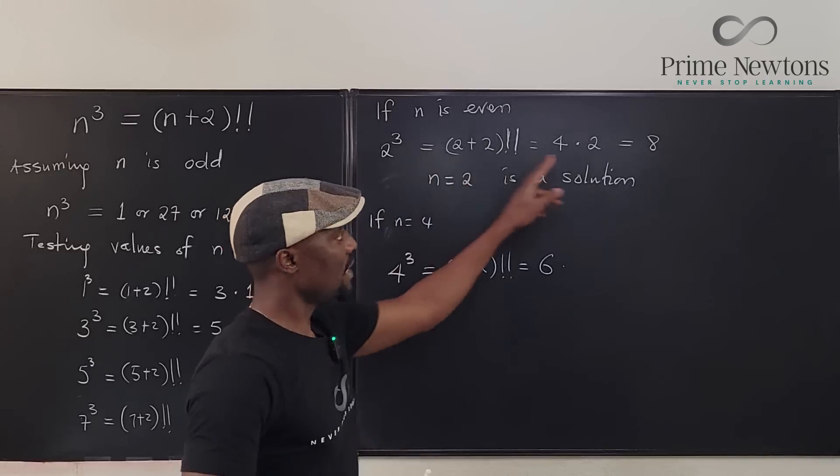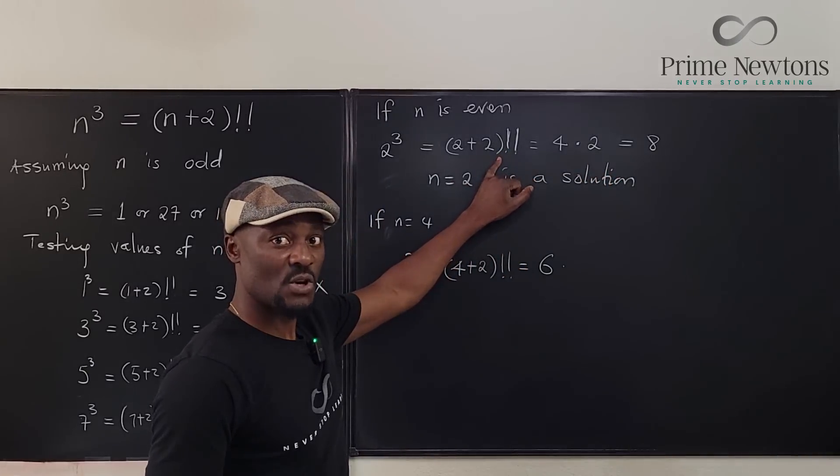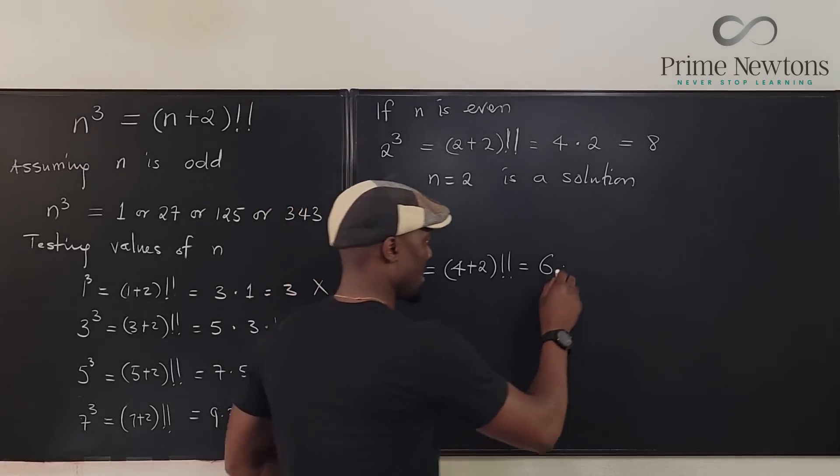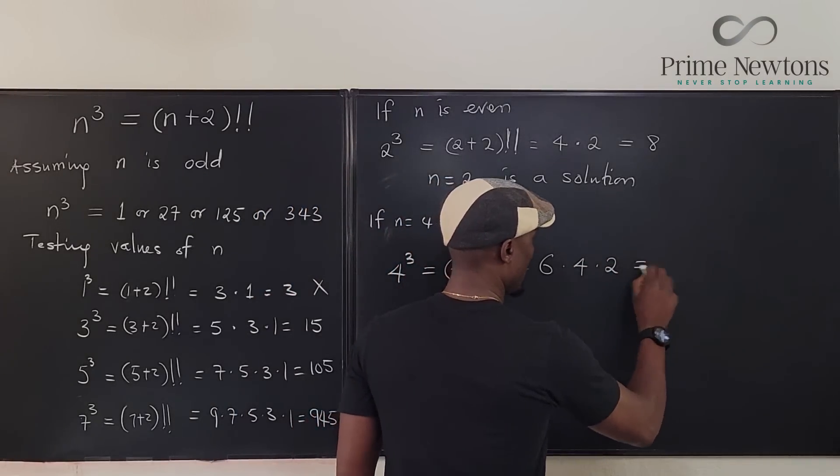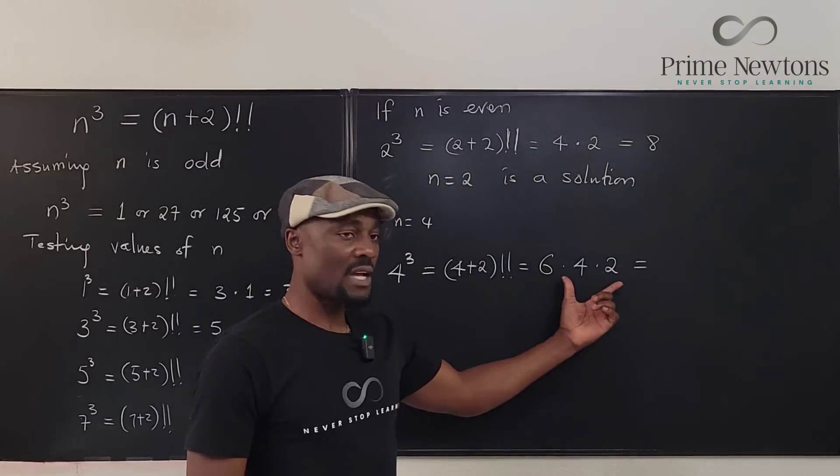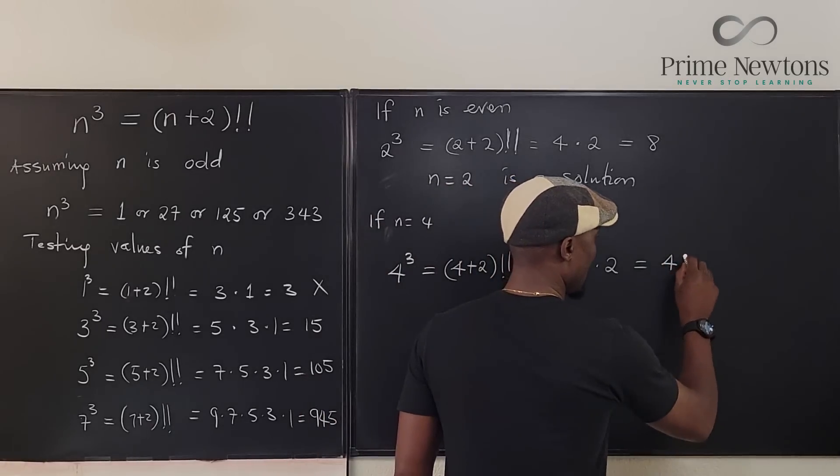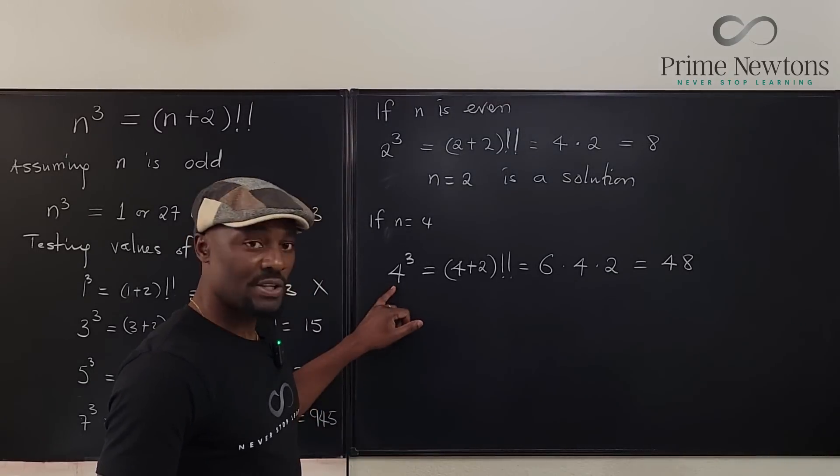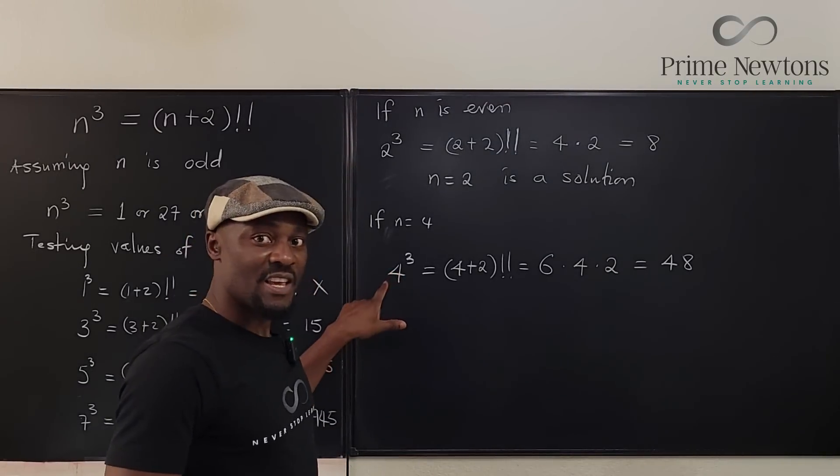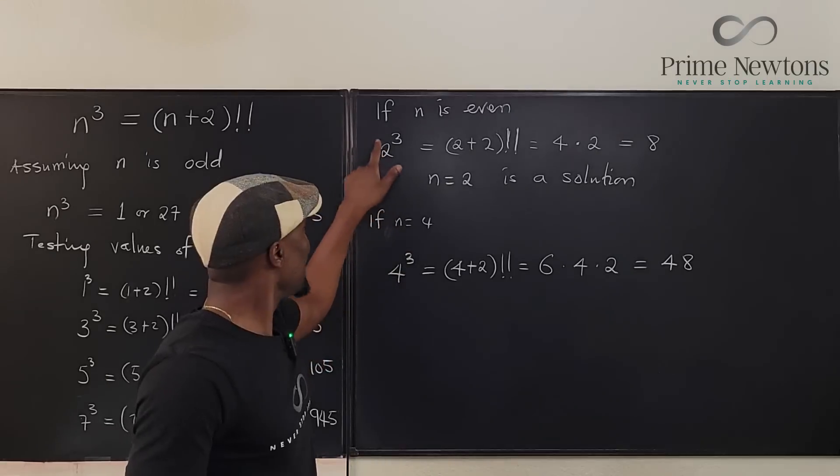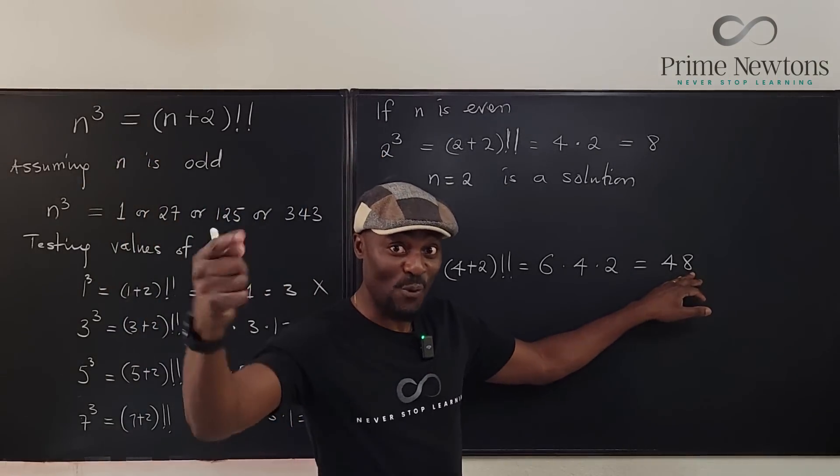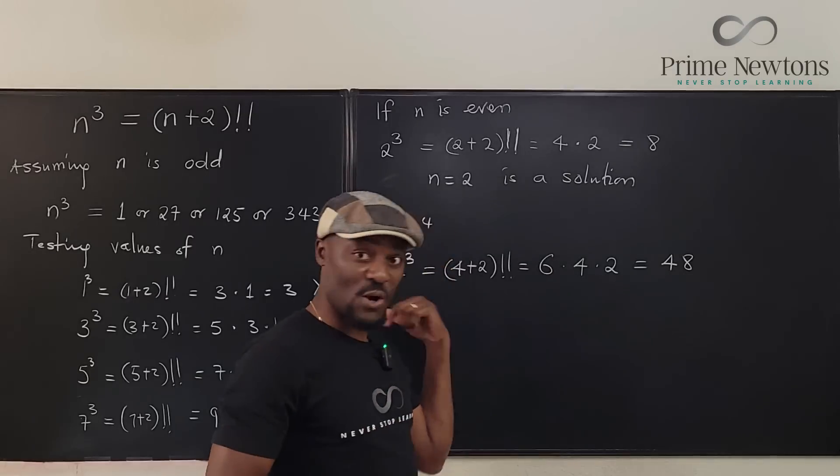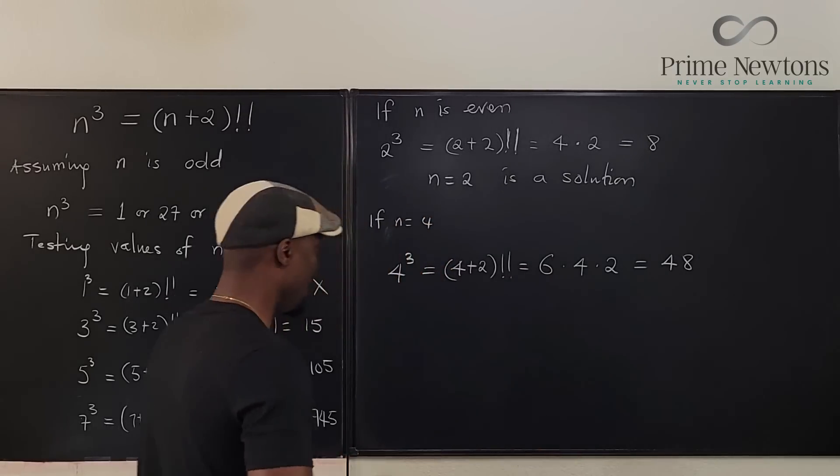So here they're equal. And remember we said these grows, this grows faster. So let's see, 6 times 4 times 2 will be equal to 8 times 4, 48. So this is equal to 4 cubed is 64. So here the polynomial is greater than this. So there's hope that there's another number ahead of us, right? Because there's going to be a point where this is going to overtake this. There might be some equality. Let's try it again.